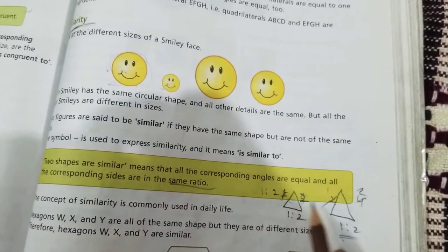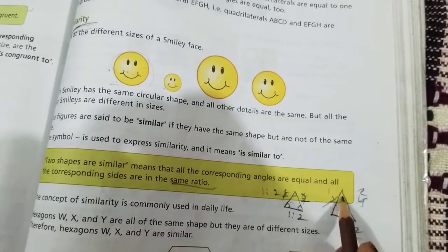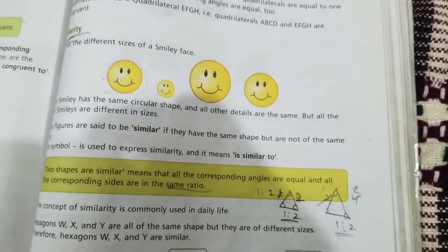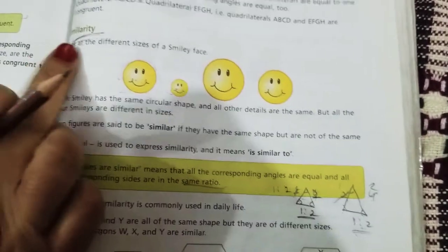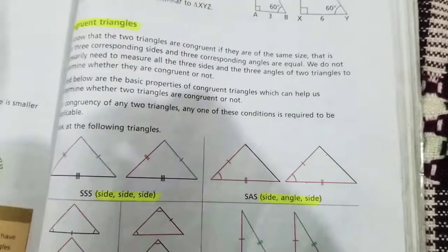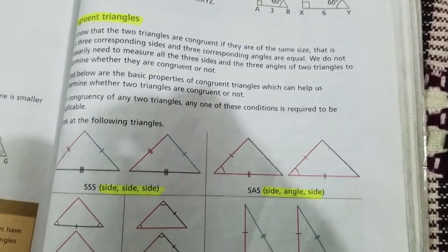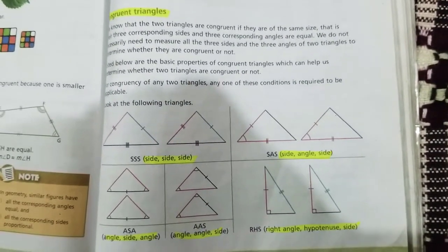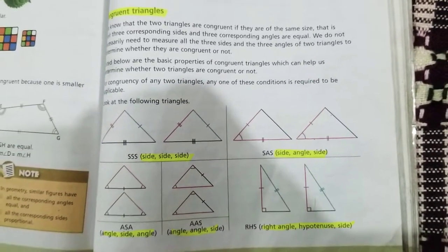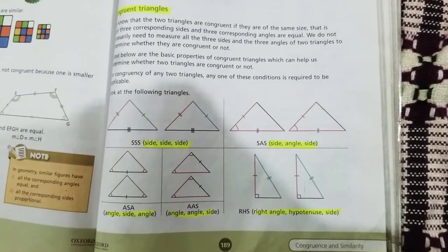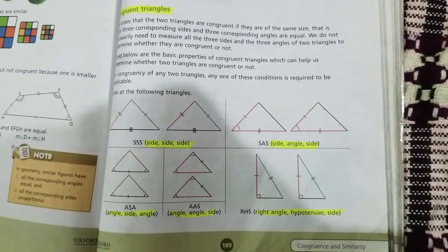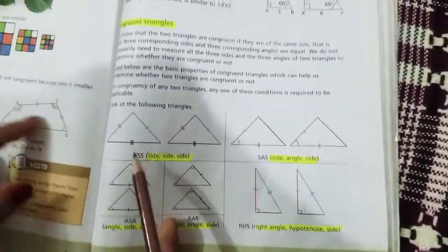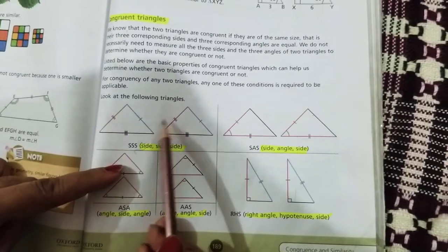So for similar figures: the shape is the same, the angles should be the same, and the ratios of sides should be the same — then we call it a similar figure, we call it similarity. If we come to congruent triangles, there are four conditions. If any one condition is satisfied, then the triangles are congruent.